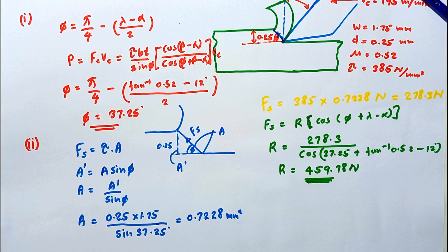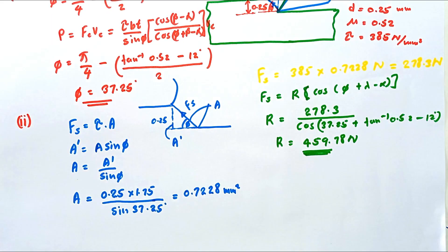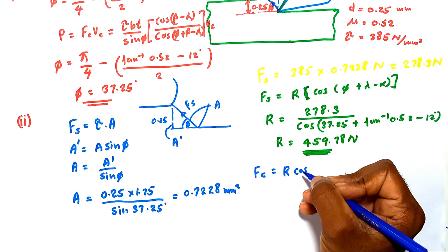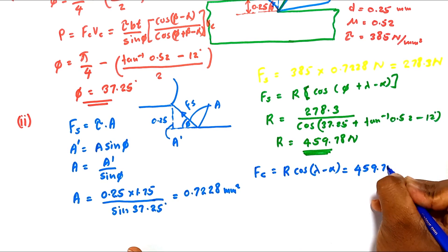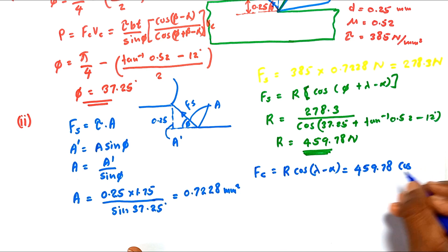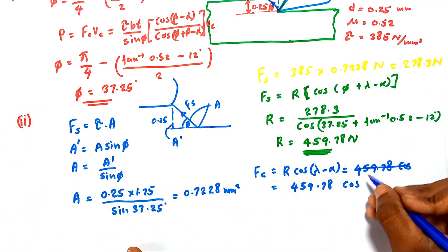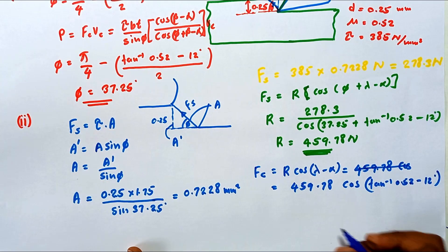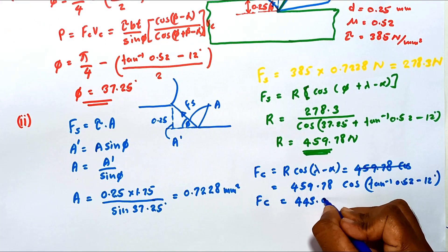If we know R, we can calculate the cutting force Fc. The equation is: Fc equals R times cos(lambda minus alpha). Substituting R as 459.78 N and lambda as tan inverse of 0.52, minus alpha of 12 degrees, the cutting force Fc equals 443.06 newton.